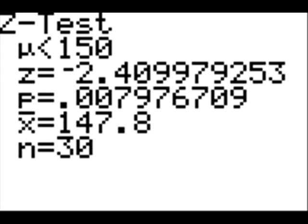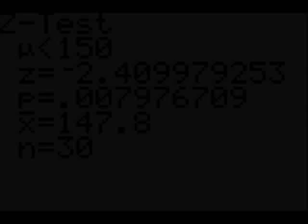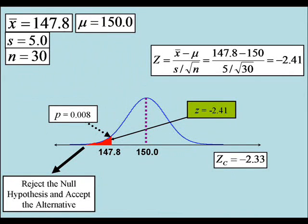Now here's the English interpretation of our results. If it's really true that the true population value is 150 minutes, then the probability we would get a sample as extreme as 147.8 minutes or less is only about 0.8%. Therefore, it's highly unlikely that the average time spent watching YouTube videos is 150 minutes. It's really more likely that it's less than 150 minutes.